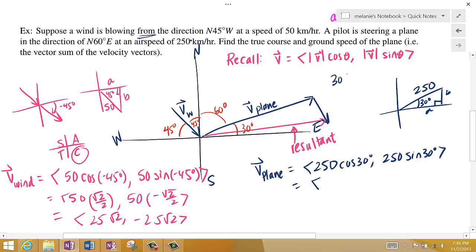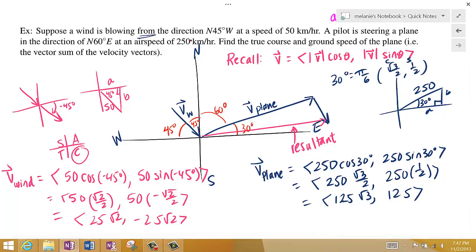So 250 cosine 30 degrees and then 250 sine 30 degrees. Well, I know 30 degrees is pi over 6. So that's root 3 over 2 and 1 half cosine comma sine. So that's 250 times square root of 3 over 2 and then 250 times 1 half. You should be always checking me on your paper as well. So this is 125 root 3, excuse me, and 125 like this.